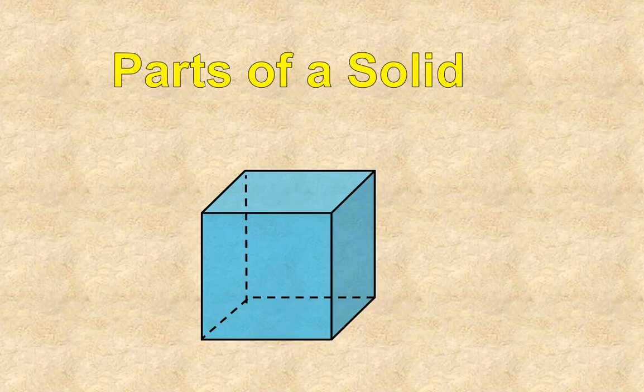First off, the definition of a solid. When we're talking about a solid, we're talking about a three-dimensional solid like this. So we've gone from having two-dimensional figures like a square and a rectangle to now having solids that are in three dimensions.